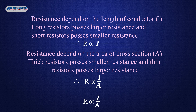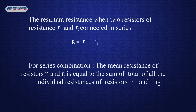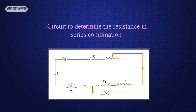Resistance also depends on the area of cross section. Thick resistors possess smaller resistance and thin resistors possess larger resistance. Therefore, R is directly proportional to 1 by A, and R is directly proportional to L by A. The resultant resistance when two resistors of resistance R1 and R2 are connected in series is R equals R1 plus R2. For series combination, the resultant resistance is equal to the sum of all the individual resistances. Let us see the circuit.